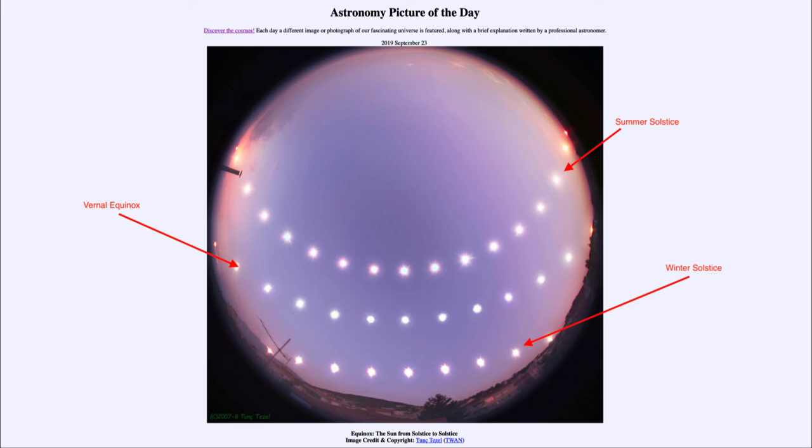That was our picture of the day for September 23rd, 2019. It was titled Equinox: The Sun from Solstice to Solstice. We'll be back again tomorrow for the next picture, previewed to be Martian Dunes Thawing. So we'll see what that is about tomorrow. Until then, have a great day everyone, and I will see you in class.